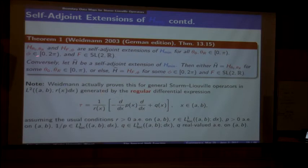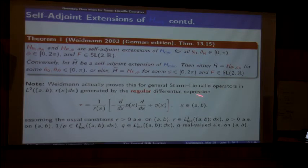Let me go to Krein's resolvent formula. What is Krein's resolvent formula? The idea is the following. You pick a self-adjoint extension—with certain boundary conditions, coupled or separated—then you pick another self-adjoint extension with some other boundary conditions, also coupled or separated. Then you look at the difference of their resolvents and you would like to describe that.